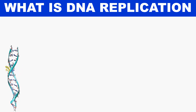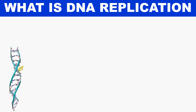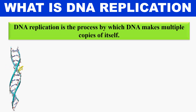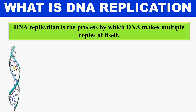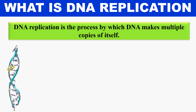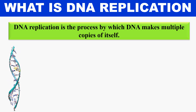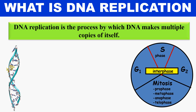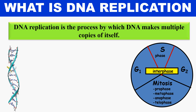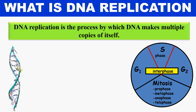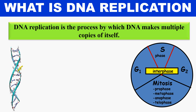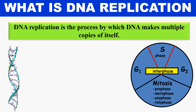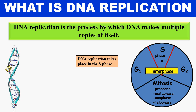So first of all, what is DNA replication? DNA replication is a process by which the DNA makes many copies of itself — by which DNA is multiplied. This is a typical cell cycle which consists of different phases like interphase and mitosis, where the interphase consists of G1, S, and G2 phase. DNA replication takes place in the S phase.